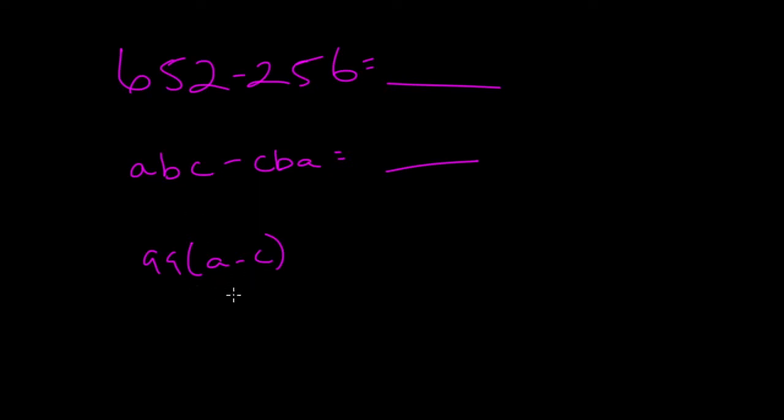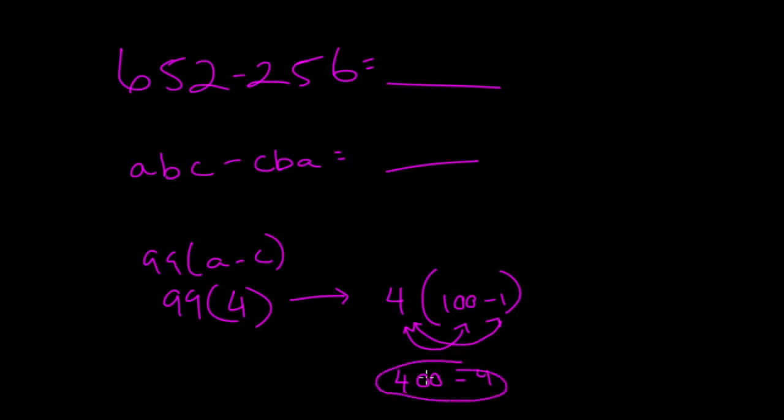And you may say, oh, that looks really complicated to find 99 times 4. How do I do that? Well, 99 times 4 is no different than 4 times 100 minus 1. Agreed? Then we can do the distributive property and get 400 minus 4, right?